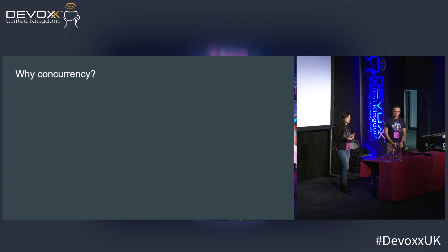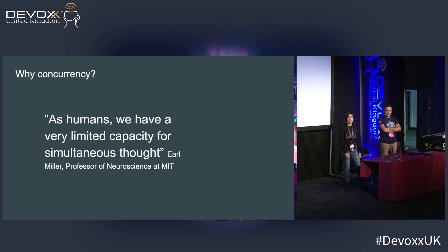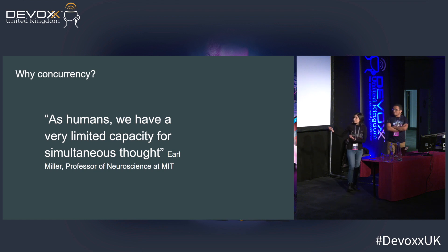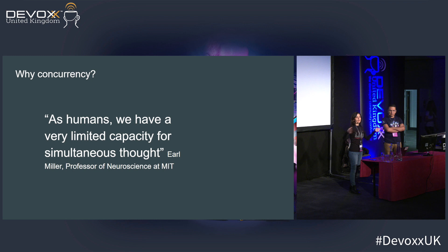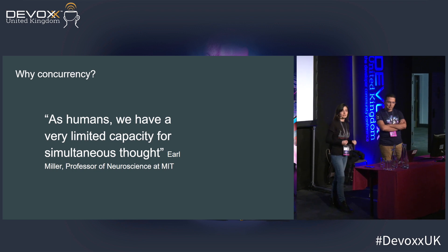So what happens there? I got to wondering when preparing for this talk — is this just me? Is it just the developers I've happened to work with? Or is there a more common problem related to concurrency? It turns out that neuroscience might have some answers. An MIT professor of neuroscience has written in a research paper: as humans, we have very limited capacity for simultaneous thought. He also explains how bad we are at multitasking — but we all know that. Computers are actually very good at simultaneous execution — that's what they're designed for, particularly more recent ones.